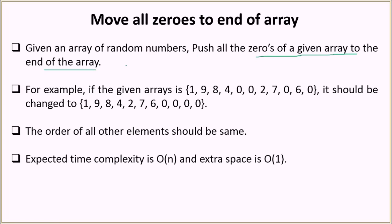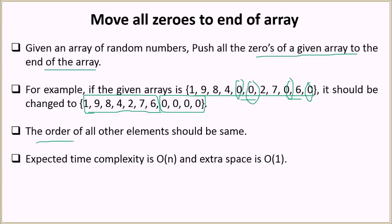For example, you are given this array and you can see that there are four zeros in between. We have to push all these four zeros to the end, and the remaining non-zero elements should come first. Also note that the order of all the other elements should remain the same.